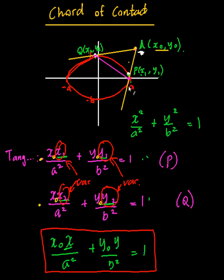So if I plug in x1 and y1, which happens to satisfy the chord of contact as well as the tangent, that is going to be the first equation, the equation at P.